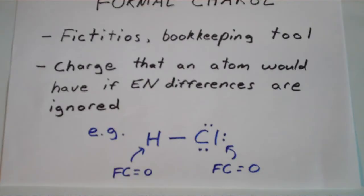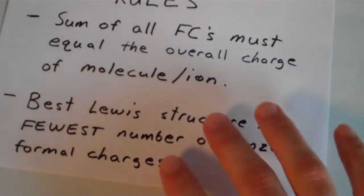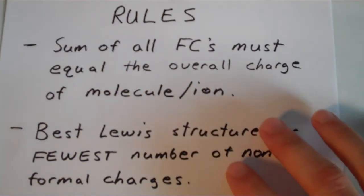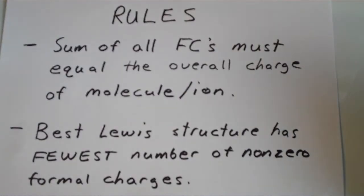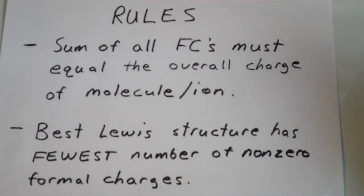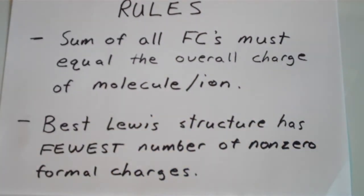There are a couple of rules when working with formal charges. First, the sum of all formal charges in your molecule or ion must equal the overall charge of that molecule or ion — zero for a neutral molecule, or the ion's charge for a polyatomic ion. Second, the best Lewis structure has the fewest number of non-zero formal charges.